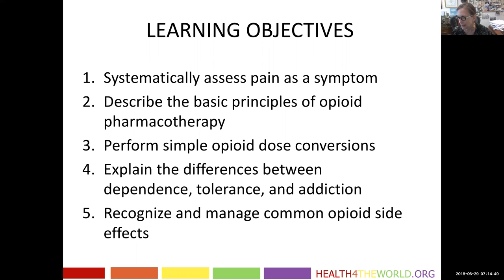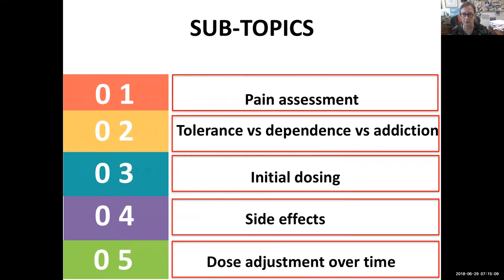We're going to make sure that everyone is very clear on the difference between dependence, tolerance, and addiction. In the United States there's still a tremendous amount of confusion and misinformation about these things. And then lastly, we'll spend a short period of time on how to prevent and manage common opioid side effects. We're divided into these five subtopics: pain assessment, tolerance, dependence, addiction, dosing, side effects, and dose adjustment over time as disease progresses.